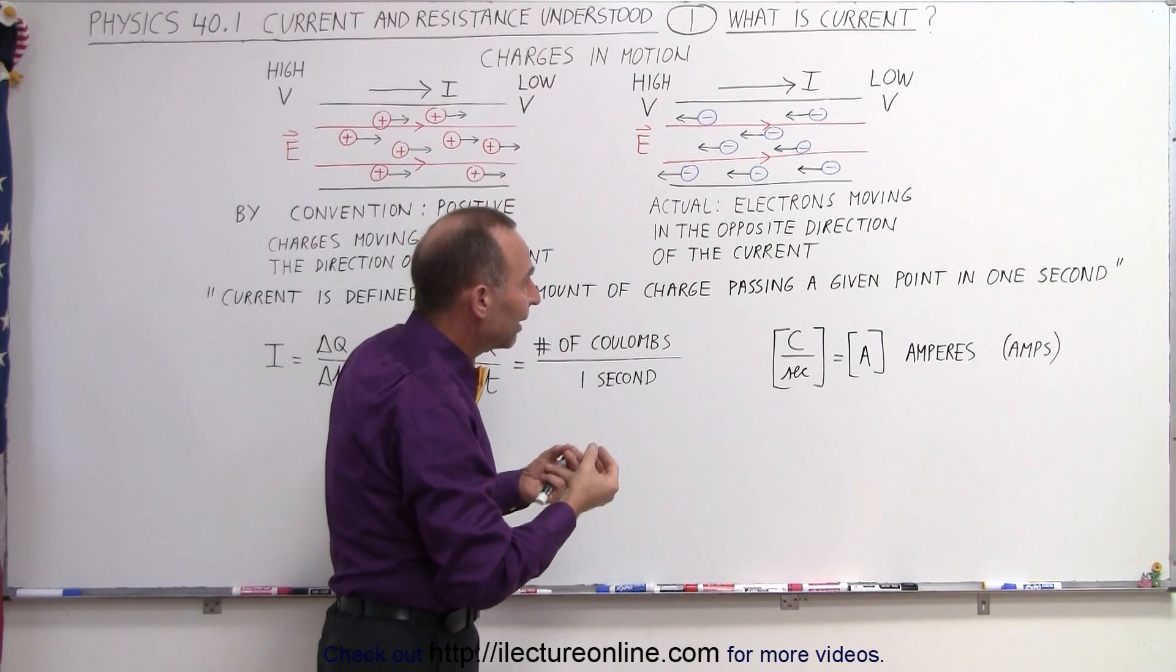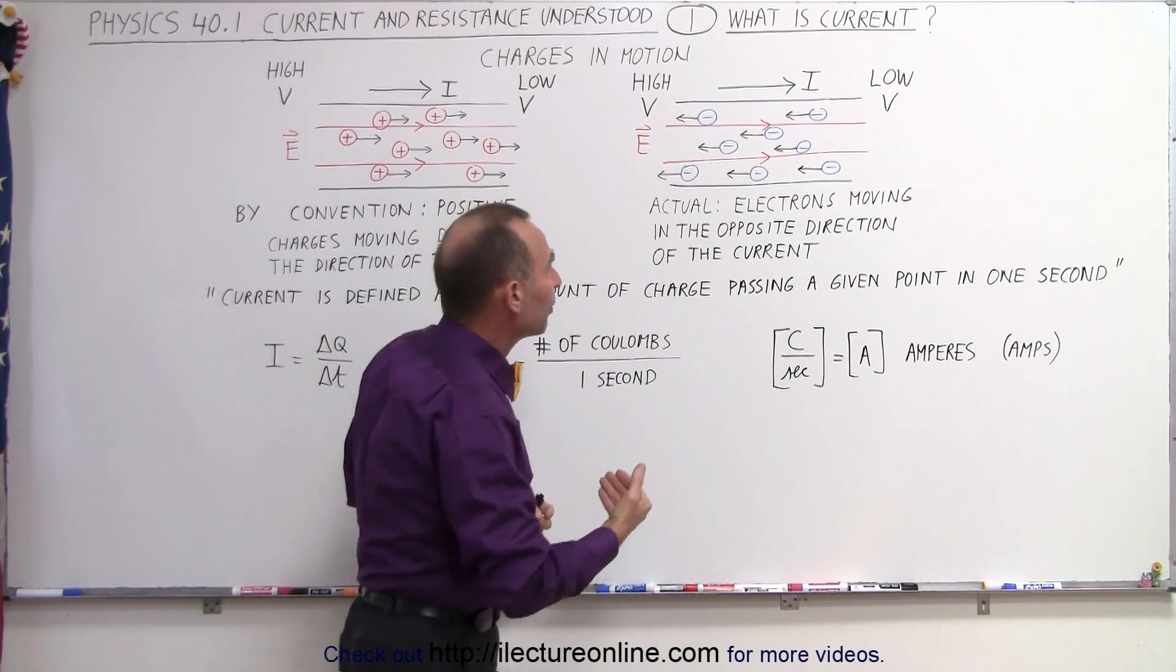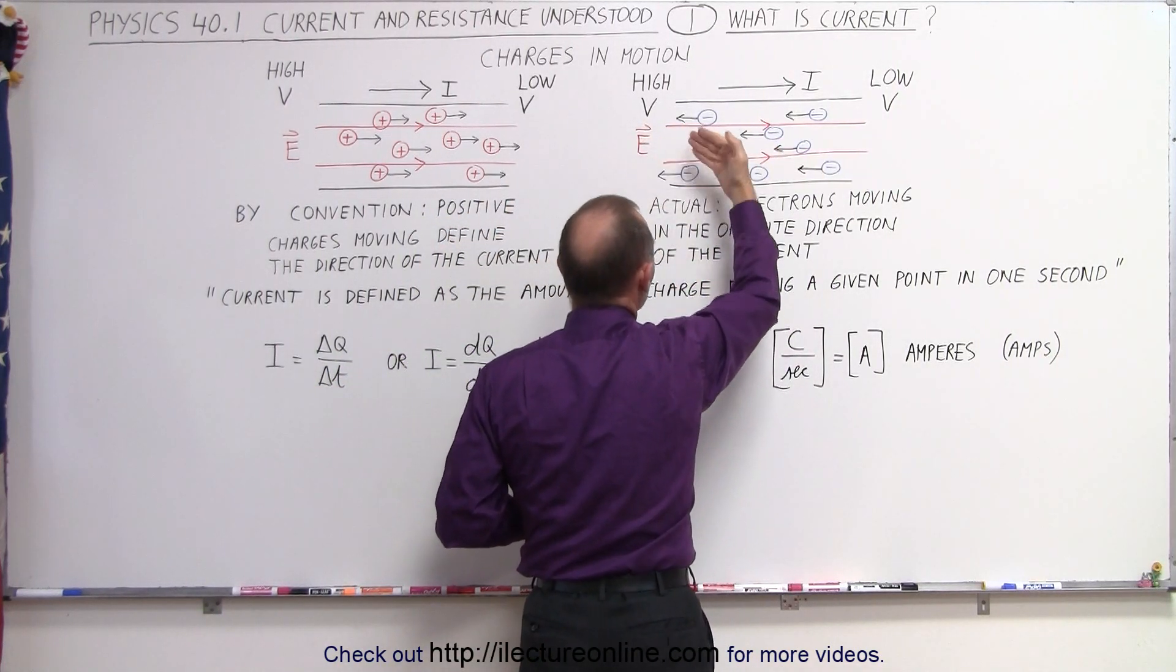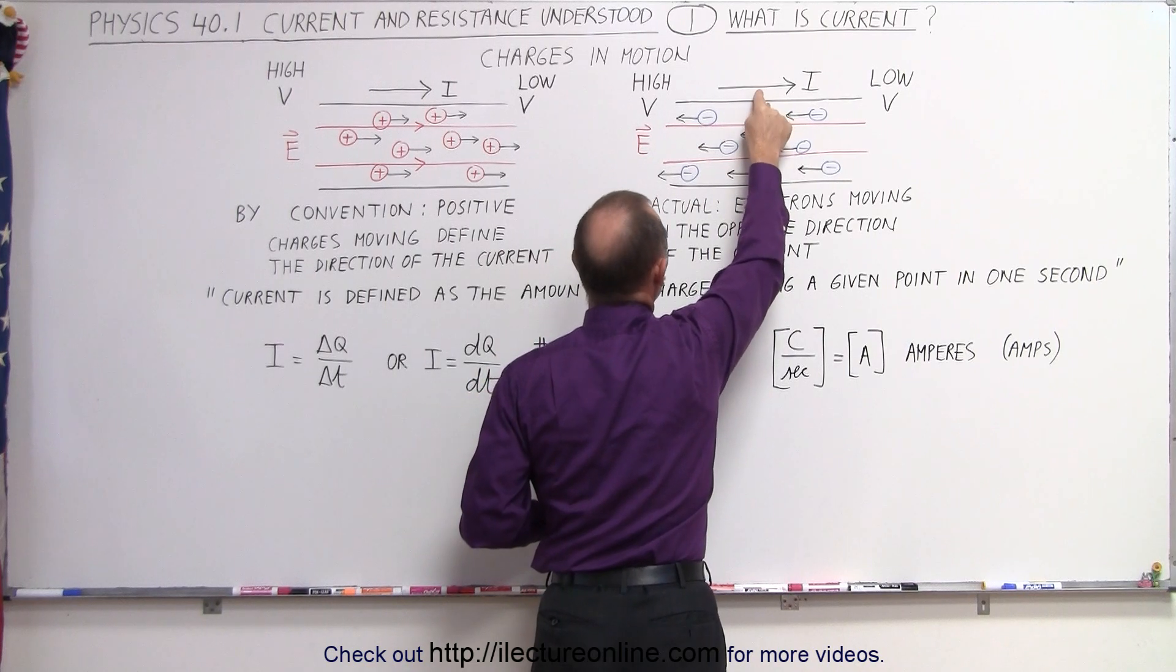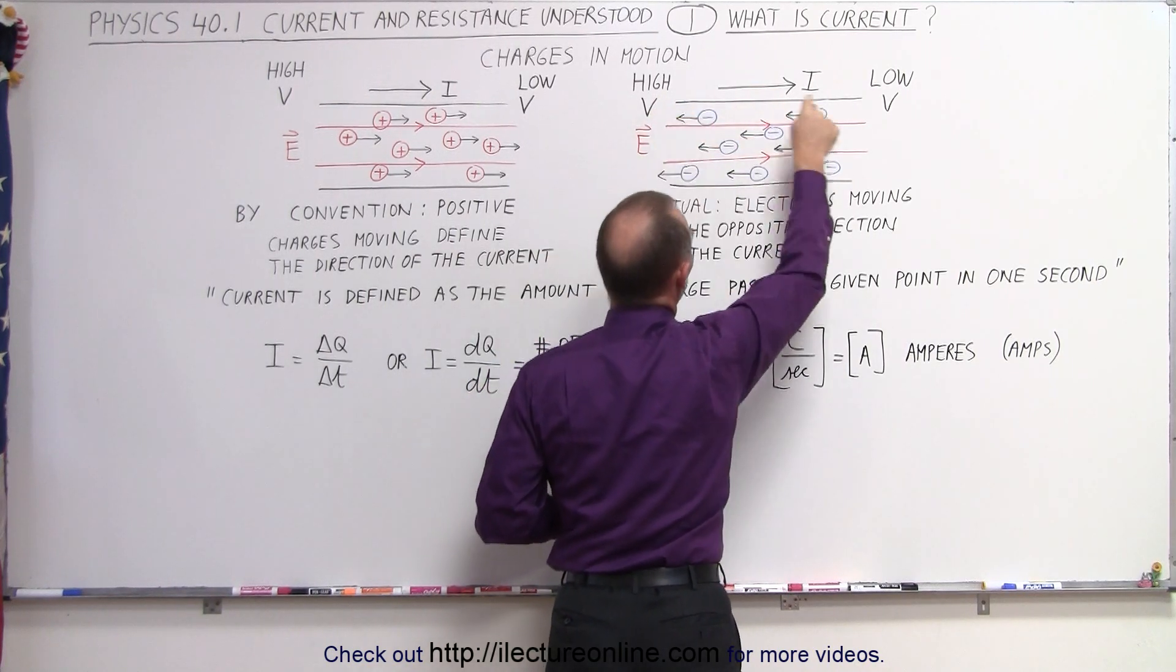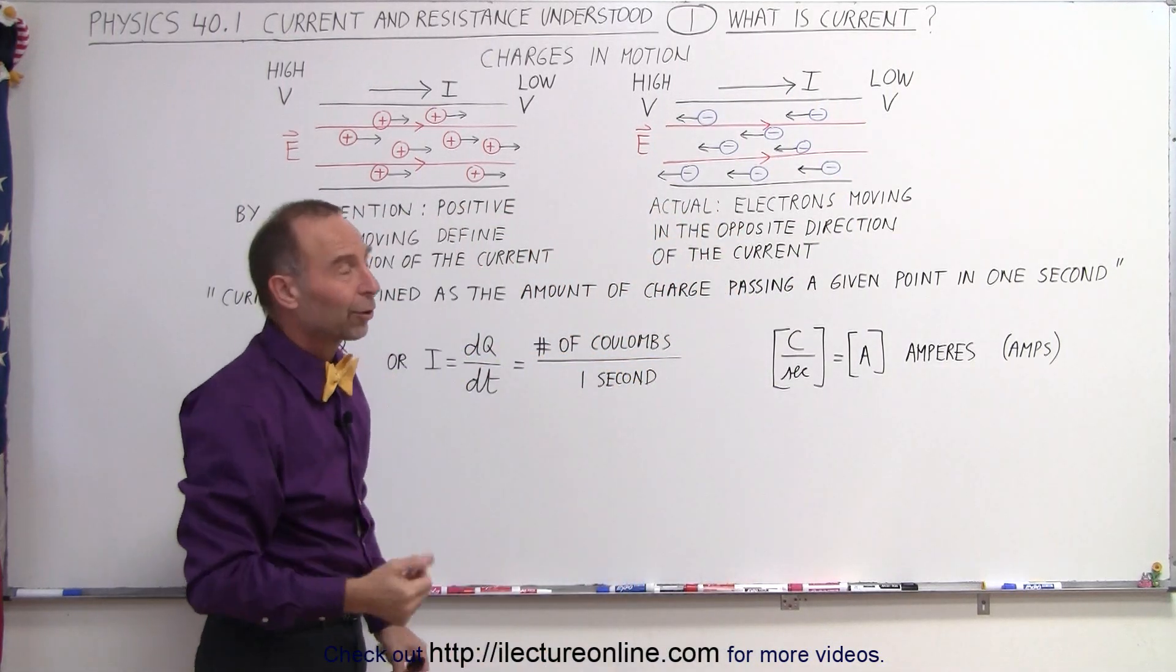In this case, it's the negative charges, the electrons that feel the force caused by the electric field, and they will be moving in the opposite direction of the electric field. And nevertheless, we still define the current as being in the same direction as the electric field, from high potential to low potential. So in essence, electrons move in the opposite direction of the current.